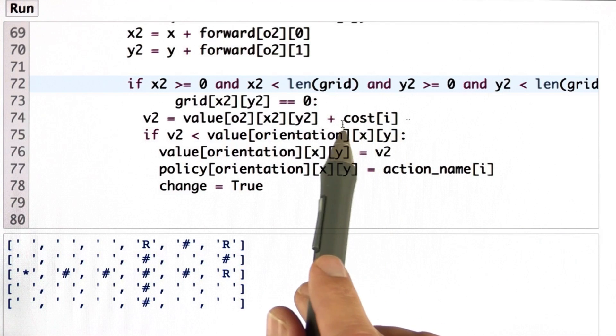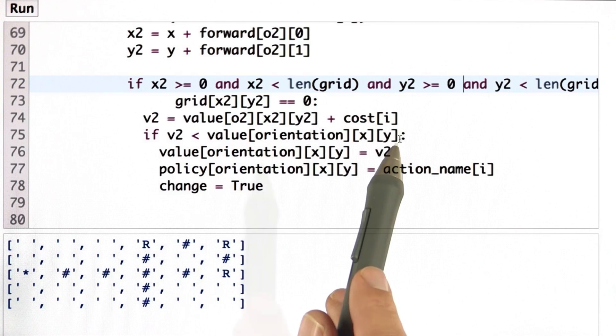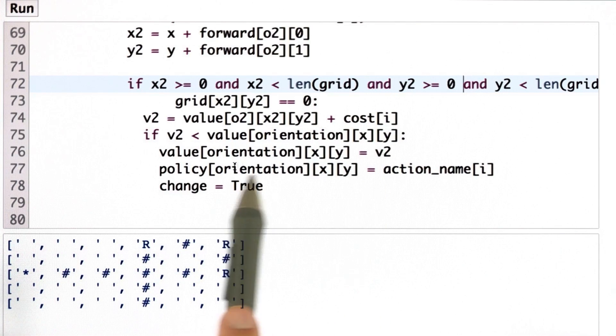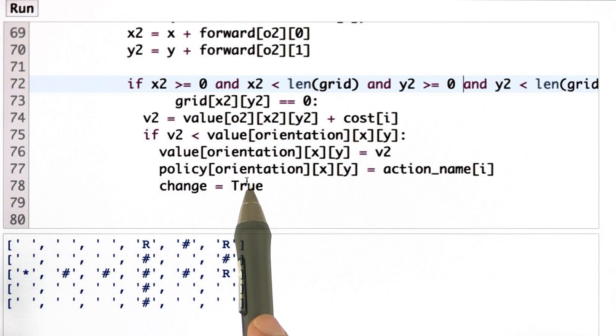And this is non-uniform depending on what action we pick now. And if this improves over the existing value, we set this value to be the new value, and we mark change as true, and we also memorize the action name as before.